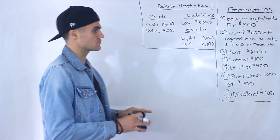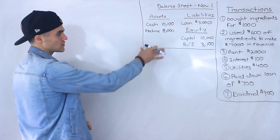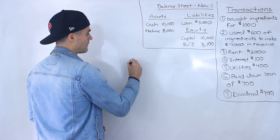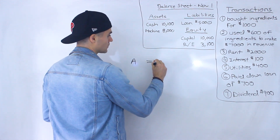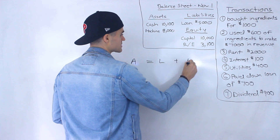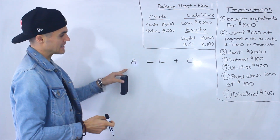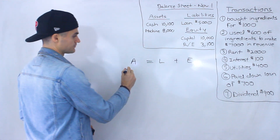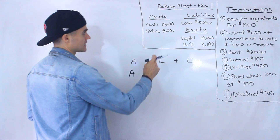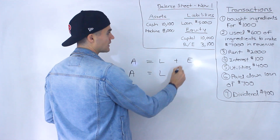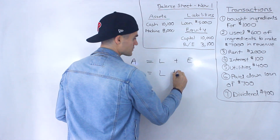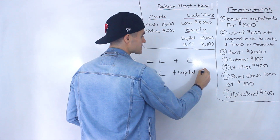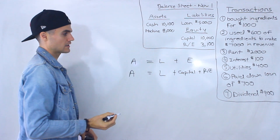To show you how that works, the first thing I'm going to do is start with the equation for the balance sheet. We know that a balance sheet — assets equals liabilities plus equity. However, we can get into a little bit more detail here. Assets equals liabilities, but this equity portion, let's split it up into capital plus retained earnings.